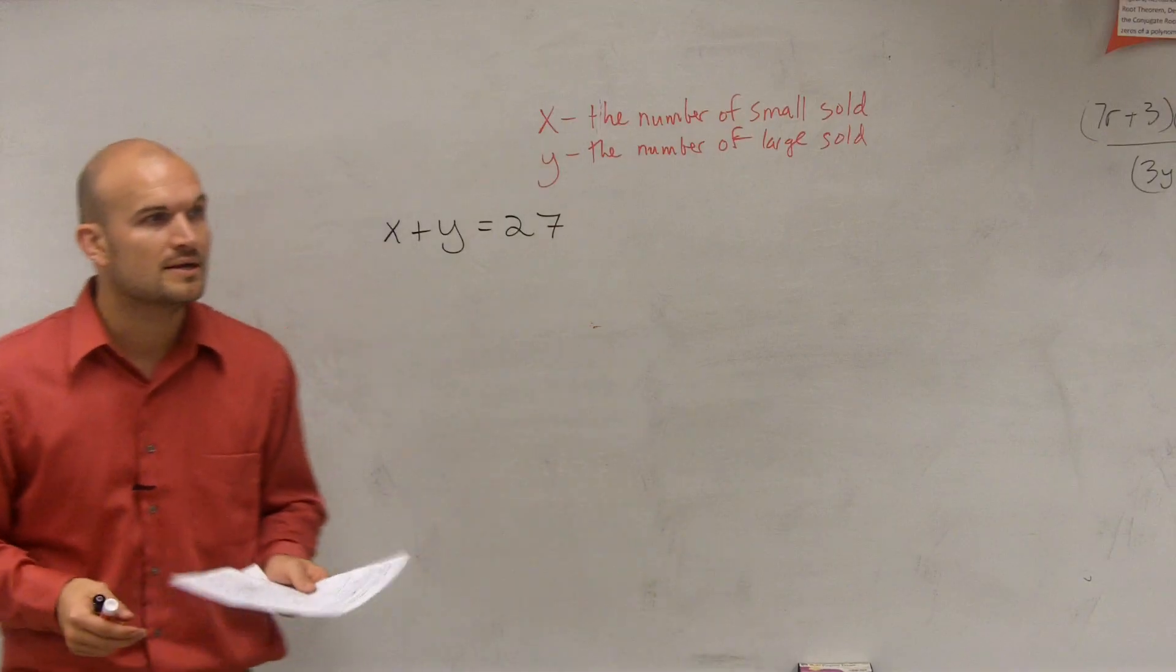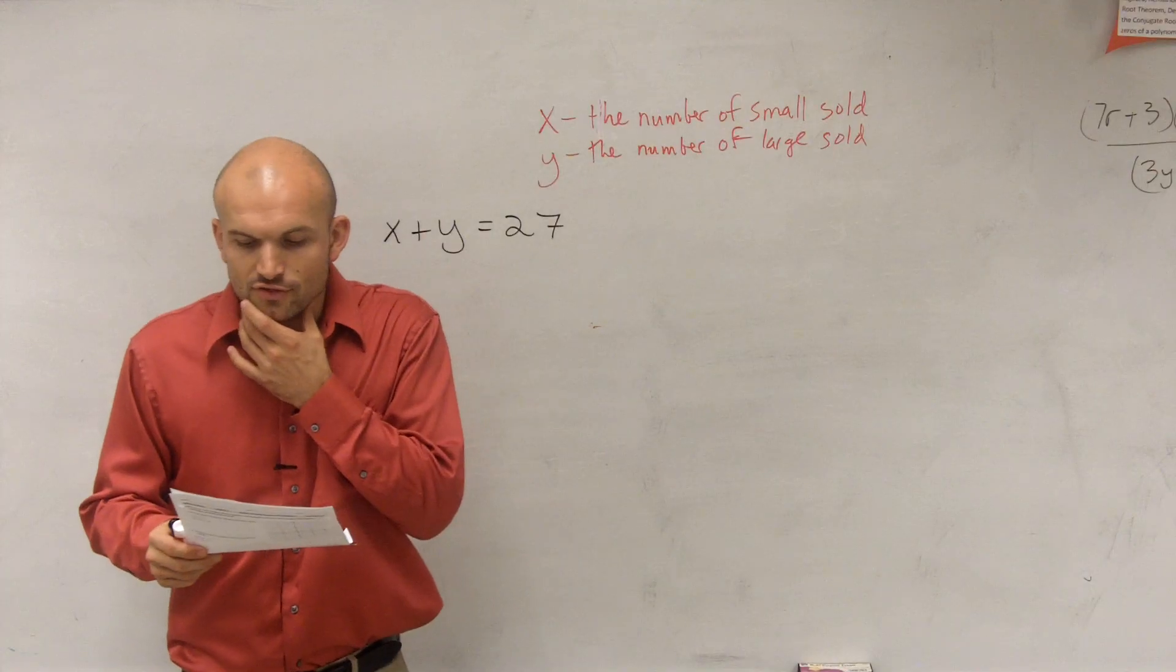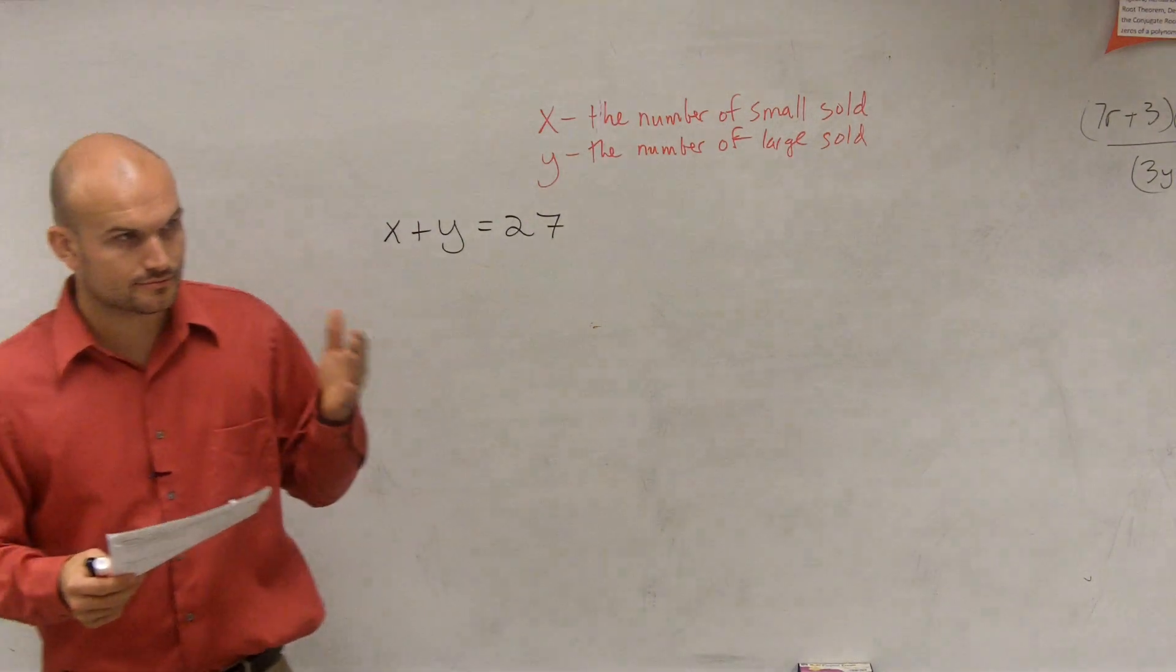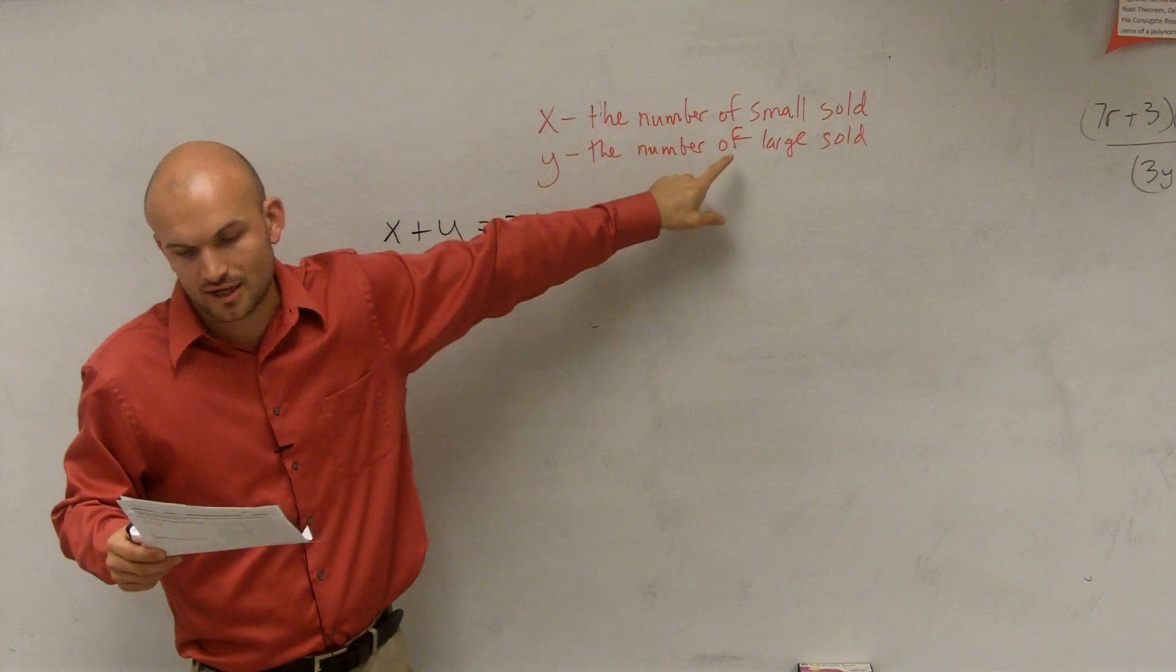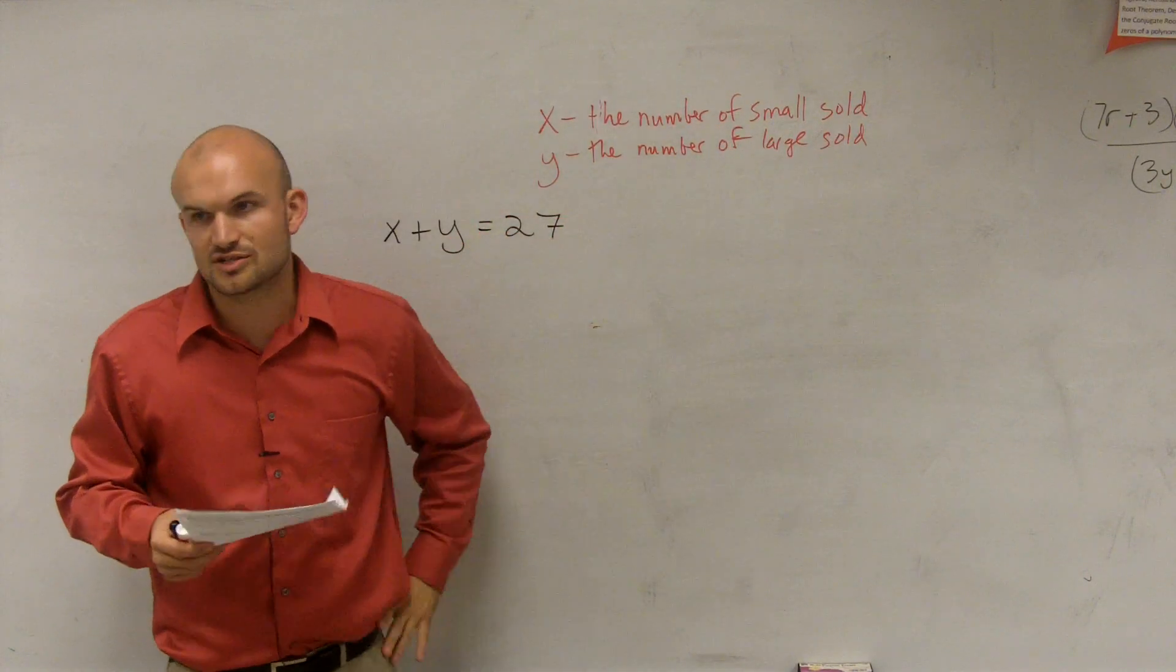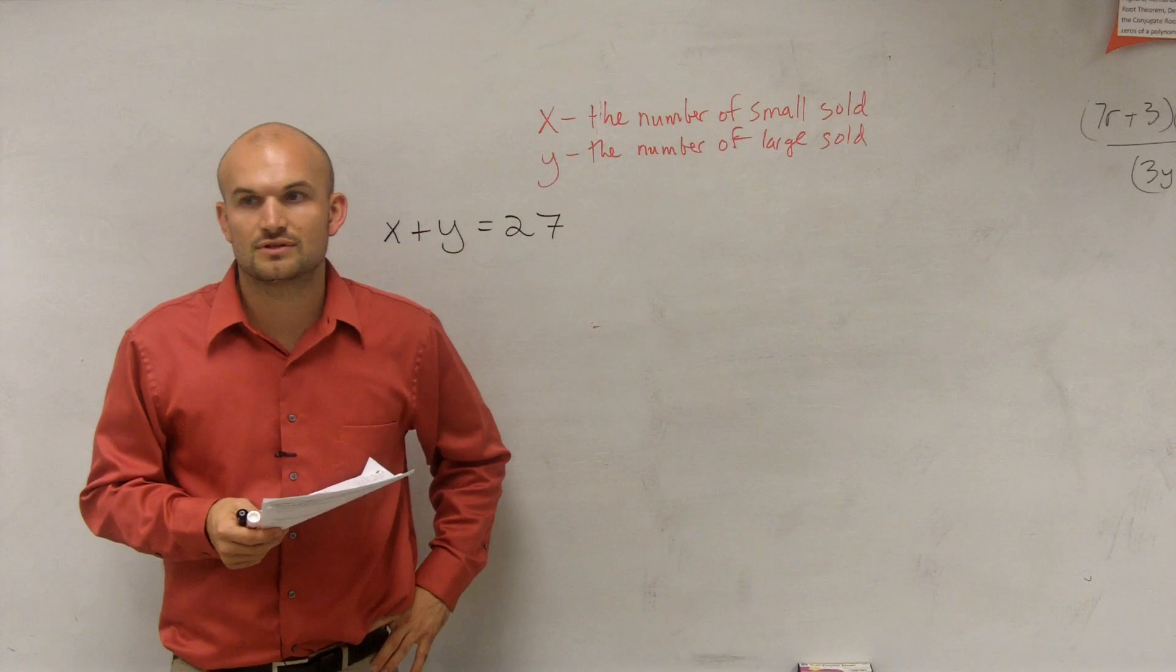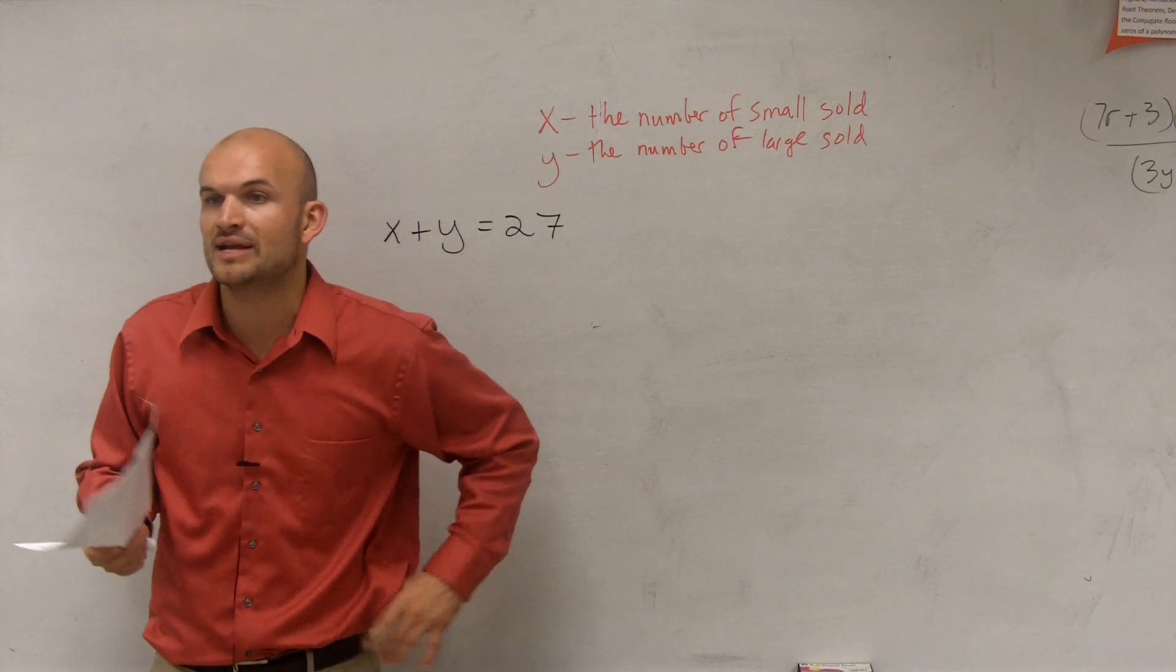Then the next one is, it says, the next sentence over says, she charges $13 for small ones and $12 for large. So for every small animal she sells, she receives, she charges $13 for them. So how am I going to want to represent $13 per stuffed animal? 13X, right? Because you want to multiply 13 times how many she sells. So if you say 13X, and then how much does she charge for the largest?